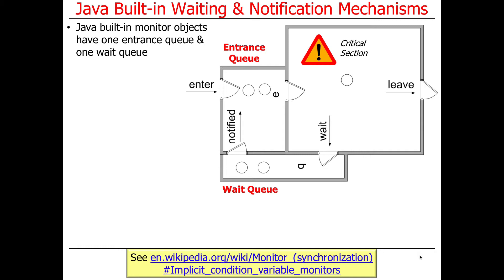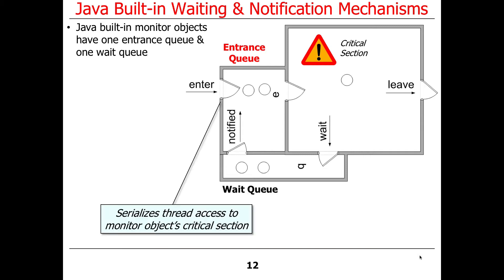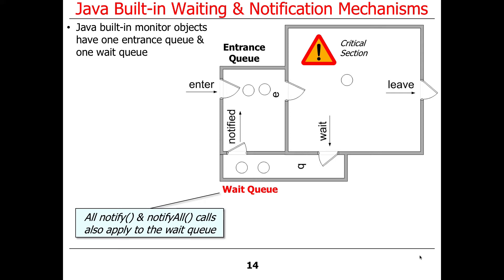Java built-in monitor objects only have a single entrance queue and a single wait queue. You've got a critical section, an entrance queue that coordinates access into the critical section, and there's a single wait queue. When you wait, you are shunted off here, much like the waiting room we talked about in our emergency room example. This is serialization to get into the critical section. This is where you park, waiting for your turn to get a chance to run again. All notify and notify all calls access the entities in the wait queue.